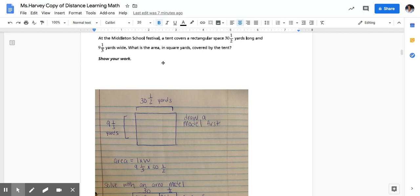So the next one that we're going to solve together is the one that is on the screen right now: At the Middleton school festival, a tent covers a rectangular space 30 and one half yards long, 9 and one third yards wide. What is the area in square yards covered by the tent?